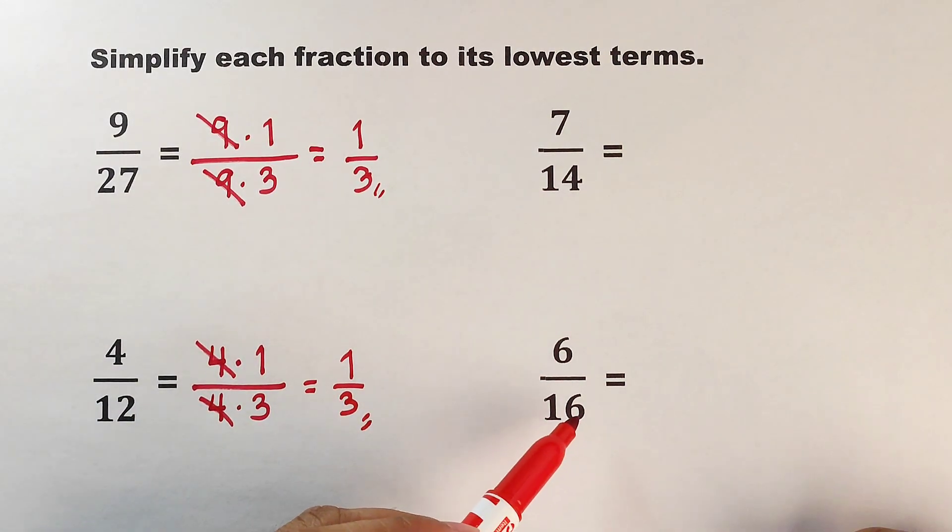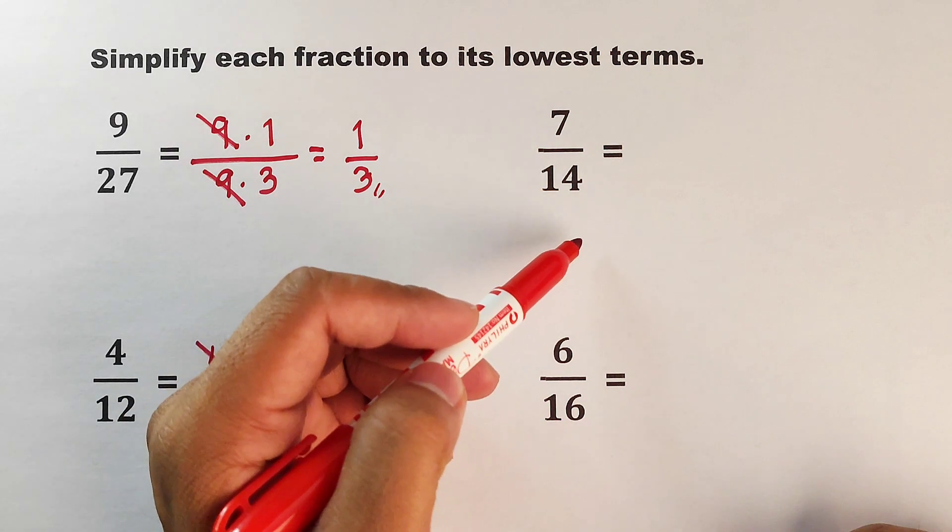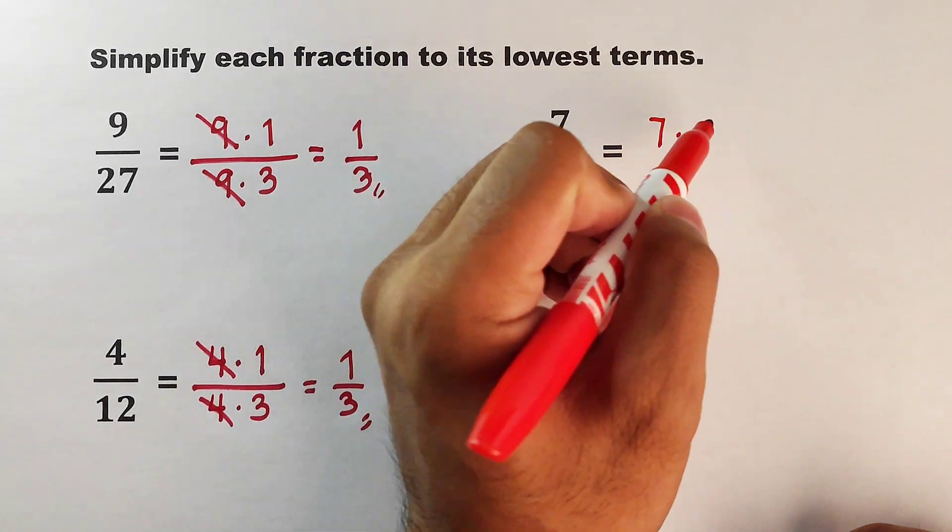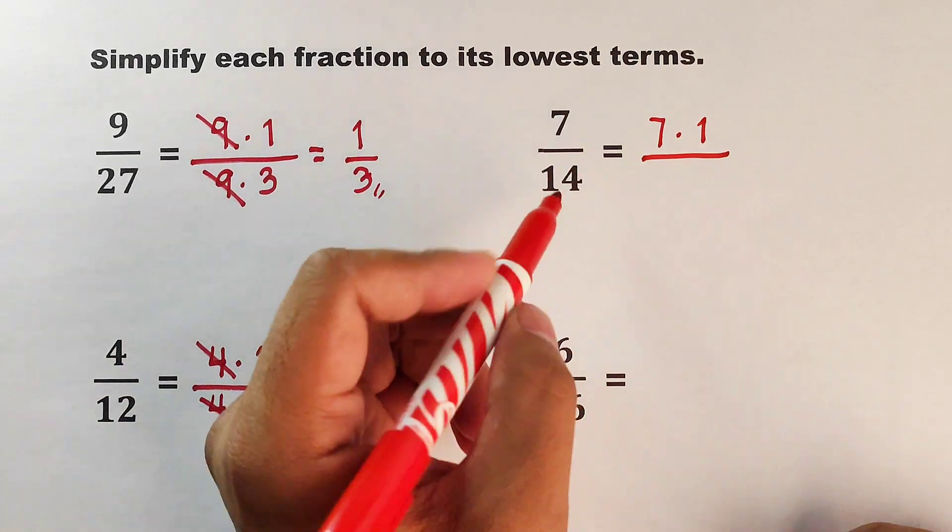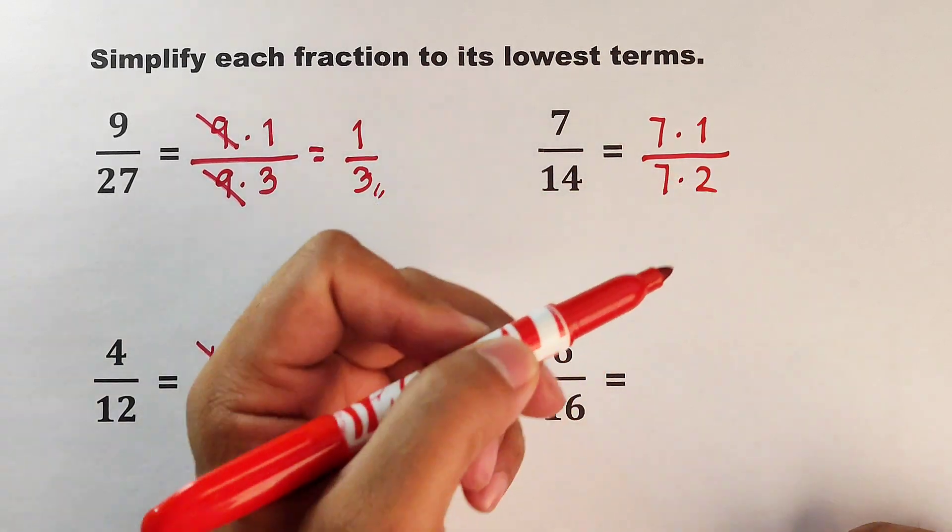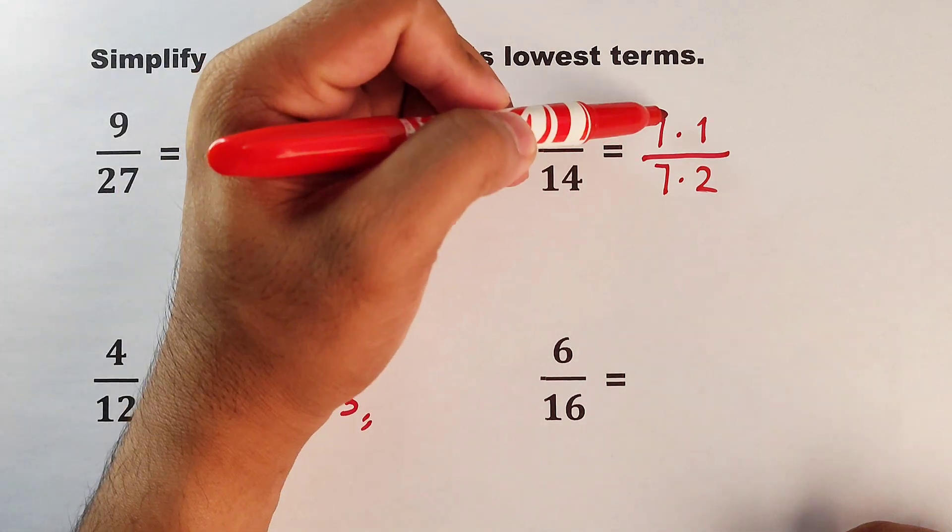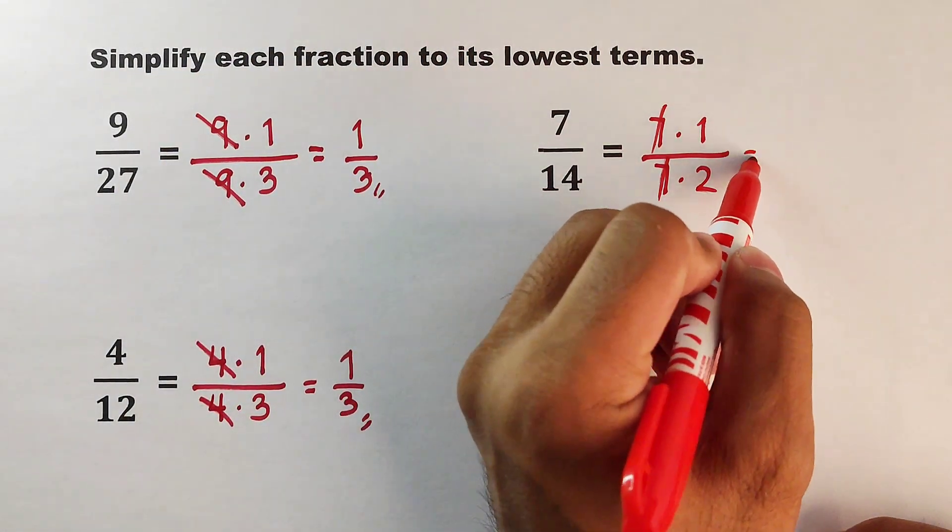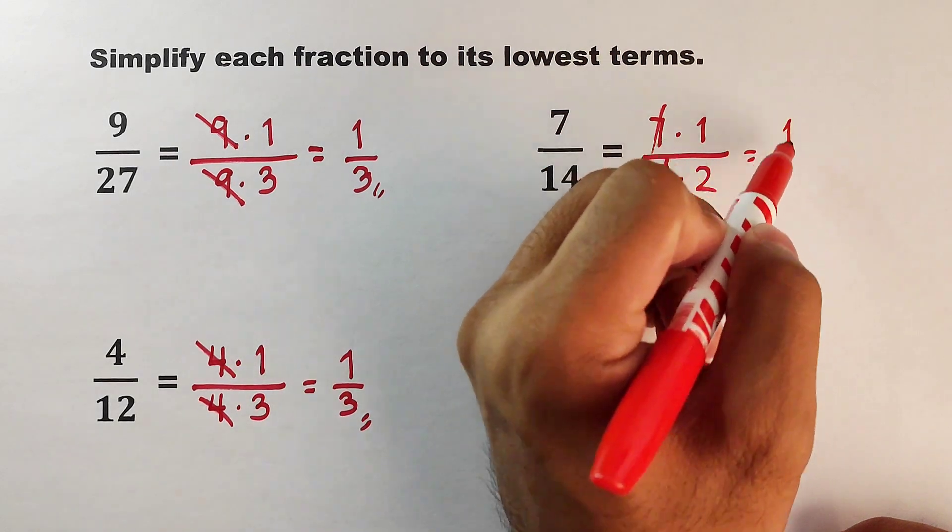Now let's have item number 3, 7 over 14. The numerator can be expressed as 7 times 1, and the denominator can be expressed as 7 times 2. They have common factors, which is 7 and 7. And as simple as that, the simplified form is 1 half.